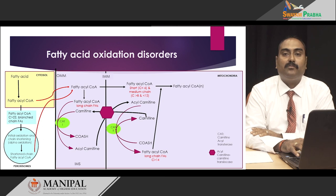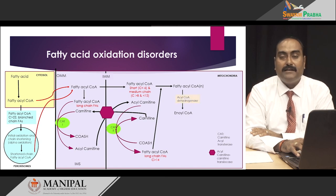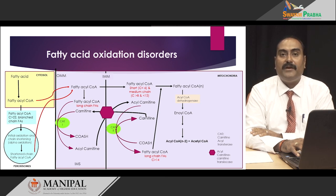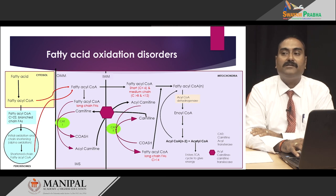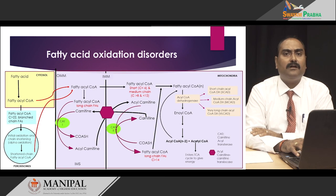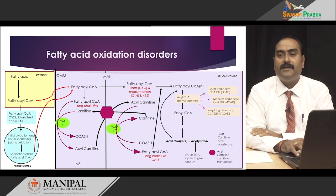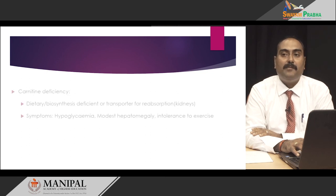Once the fatty acyl-CoA enters the mitochondrial matrix, it enters a process known as beta-oxidation. In this process, fatty acyl-CoA is acted upon by the enzyme fatty acyl-CoA dehydrogenase, which converts it to enoyl-CoA. Enoyl-CoA is then converted in subsequent steps into acyl-CoA and acetyl-CoA. The acyl-CoA has two carbons fewer than the parent fatty acyl-CoA, with those two carbons released as acetyl-CoA at every step. The acetyl-CoA enters the TCA cycle to produce energy, and the acyl-CoA re-enters the beta-oxidation pathway, continuing until fully broken down. Based on the total number of carbons in the fatty acid, the acyl-CoA dehydrogenase enzyme can be of three types: short-chain acyl-CoA dehydrogenase, medium-chain acyl-CoA dehydrogenase, or long-chain acyl-CoA dehydrogenase.